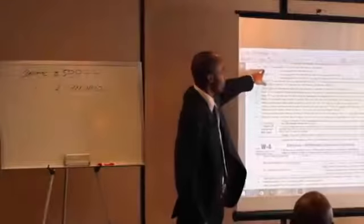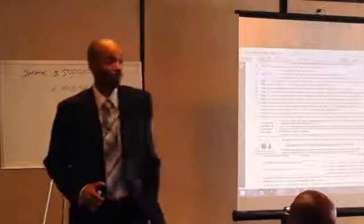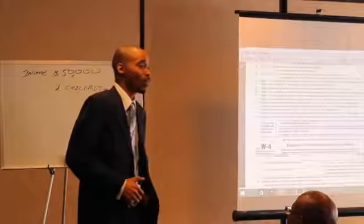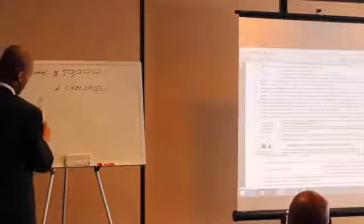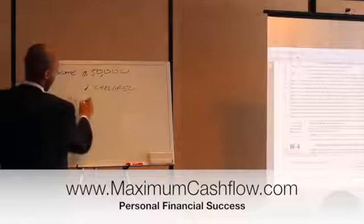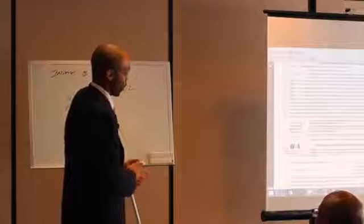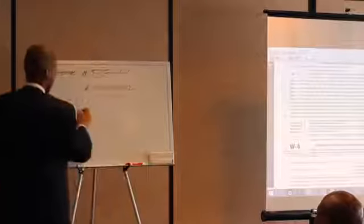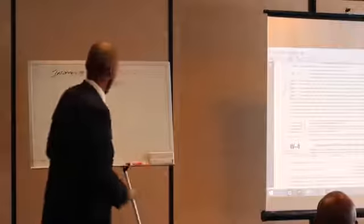It says enter one for yourself if no one else can claim you as a dependent. So should you ever have zero? See, somebody told you you don't want to owe zero, that was wrong. So right here we got one. So I'm going to do this. A, B, C, D, E, F, G, H. We got one here. B, if you are single and have only one job, this person is single and only have one job, they got one. So should they ever have zero? Enter one for your spouse. They don't have a spouse.